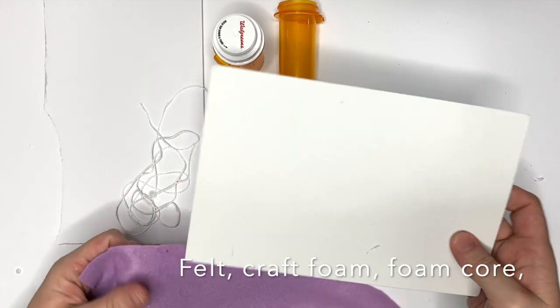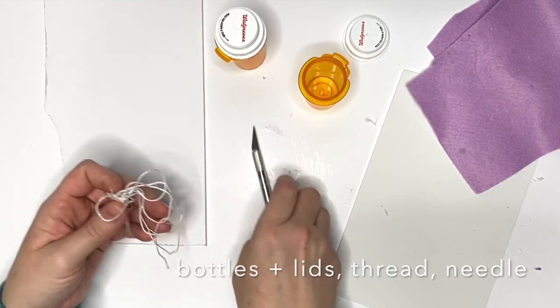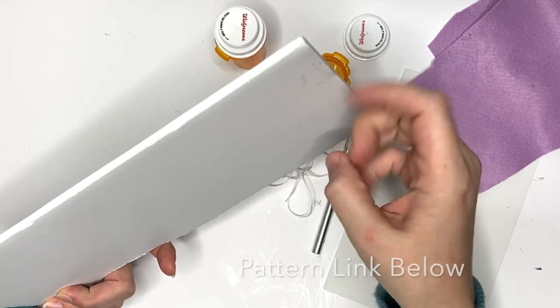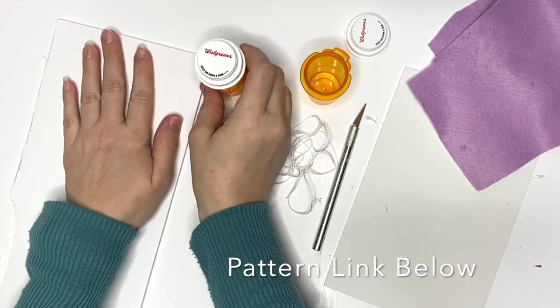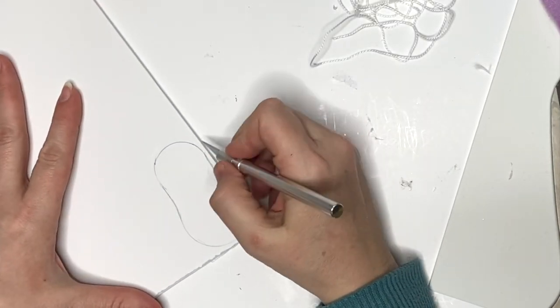So we're gonna start out with some craft foam—it's bendy felt. We're going to need medicine bottles of any kind. You can use just any kind of craft bottle. Some thread, needle, and foam core which is the thicker piece, and then we have ten patterns in this and we're gonna use the high-top sneakers.